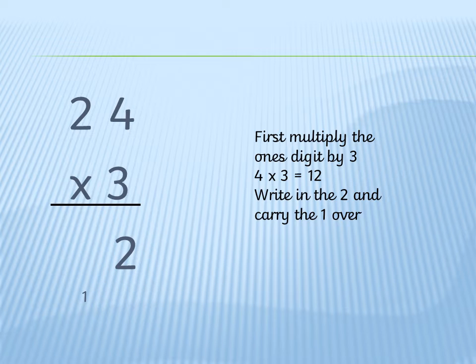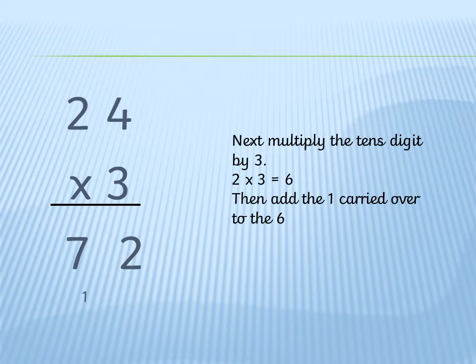Next we work out 2 times 3. We know that 2 times 3 is 6 and we need to remember to add the 1 that we carried over from the previous calculation. So 6 plus 1 is 7, so we write 7 in the tens column. Our answer is then 72. So 24 times 3 equals 72.